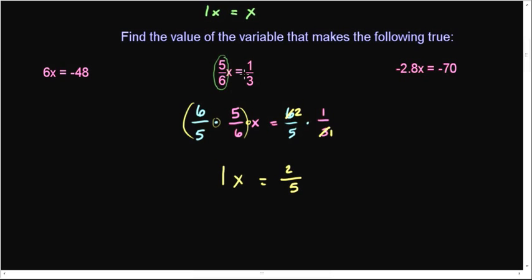But now that I've got it in 1X equals, well, 1 times X is simply X. So X is equal to 2 fifths.